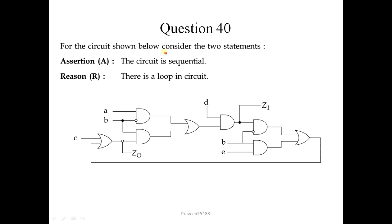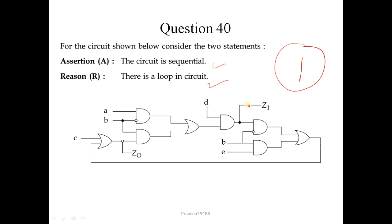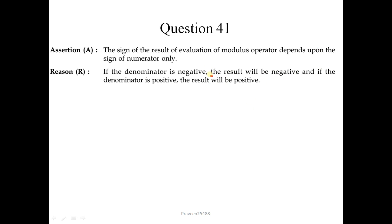Question number 40: The given circuit is a sequential circuit — this is correct. The output is actually fed back as the input of the circuit itself, and there is a loop in the circuit — both statements are correct. The correct answer is option 1 (both A and R are true and R is the correct explanation of A).